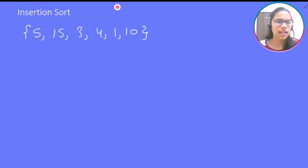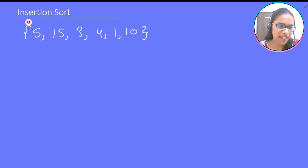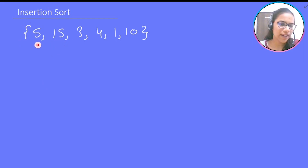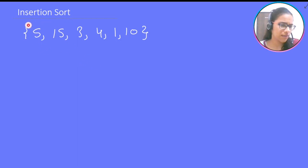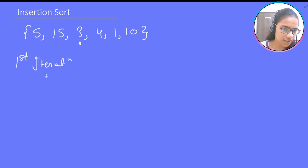In the first iteration, we come to 15. We check where to insert 15 into the sorted part. Since 5 is less than 15, 15 stays at its position. So after the first iteration, we have 5 and 15 — nothing changed.